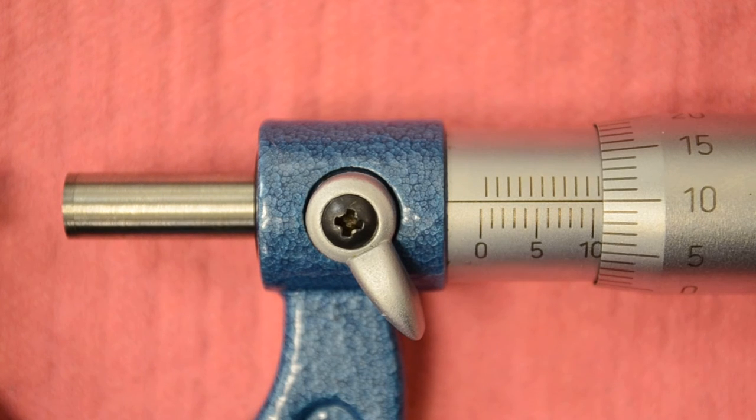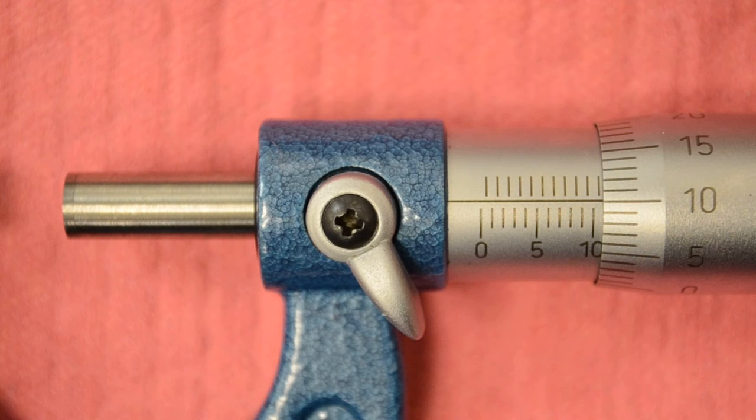Okay, today we're going to learn about the metric micrometer. The big difference between the metric and the standard, and the easiest way to identify one from the other, is the inch micrometer has 25 graduations on the thimble. That would be this part here. And the metric mic will have 50 graduations.